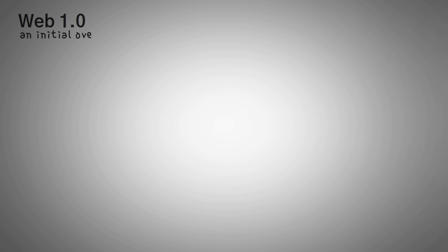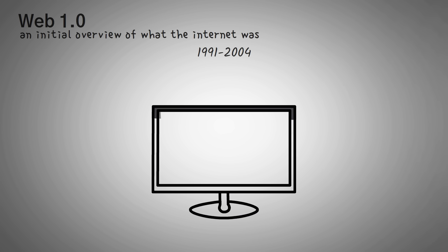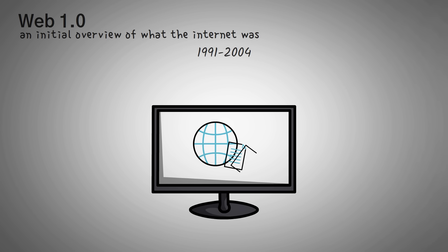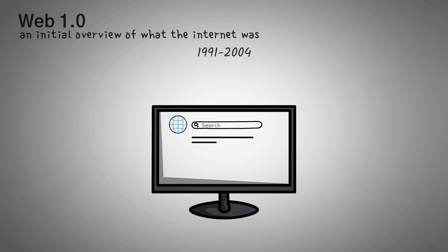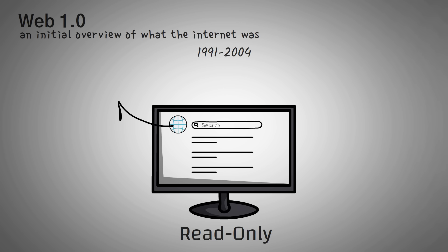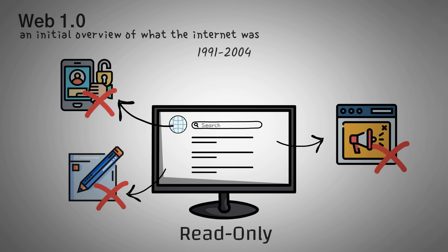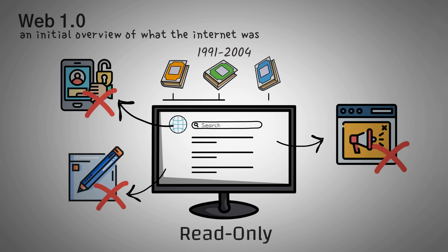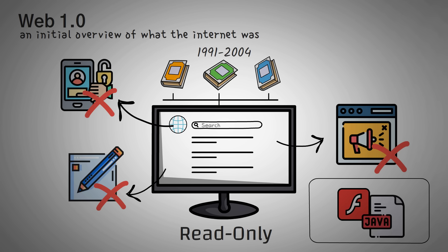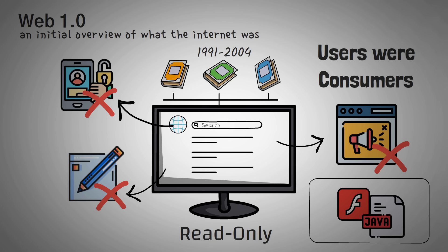Let's start with Web 1.0, an initial overview of what the internet was. Between the years of 1991 and 2004, the internet was mostly a bunch of static pages, meaning that whenever you loaded them, they just showed some stuff and that was it. Some called it read-only. There wasn't any logging in, interacting with posts, or viewing analytics. Most of the early internet wasn't even profitable by ads — it was mostly just like one big Wikipedia all hyperlinked together. With time, improvements like Flash and JavaScript added many new features. However, during this time, the users of the internet were consumers — they went to the internet to consume information.